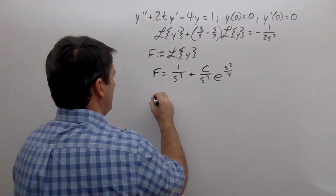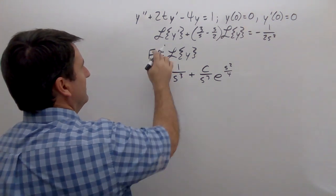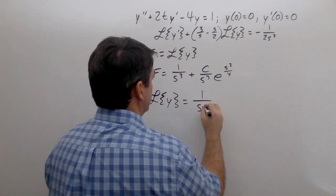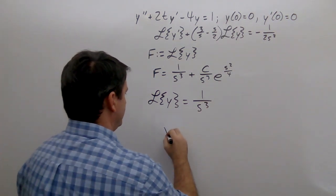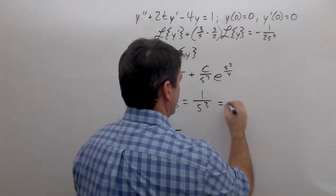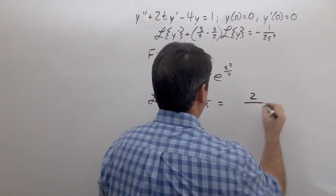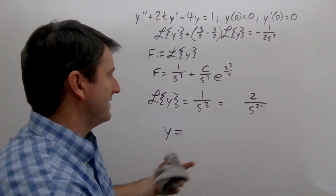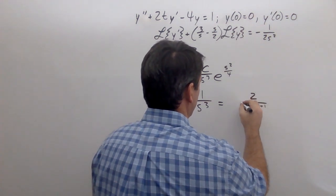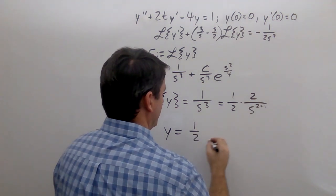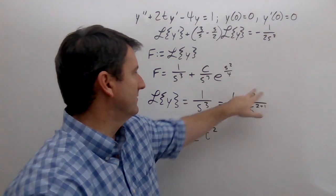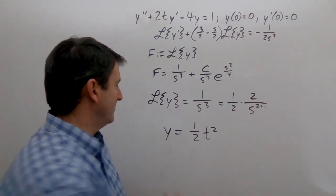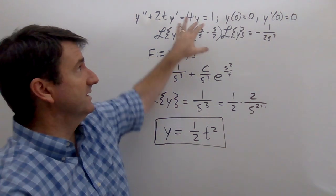With C equal to 0, F, which is the Laplace transform of y, equals 1 over s cubed. To find y, we rewrite this as 2 over s to the (2+1) divided by 2, matching the Laplace transform table entry. Taking the inverse Laplace transform gives y equals one half times t squared. That is our solution to this initial value problem.